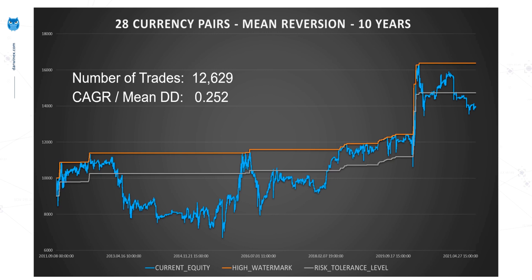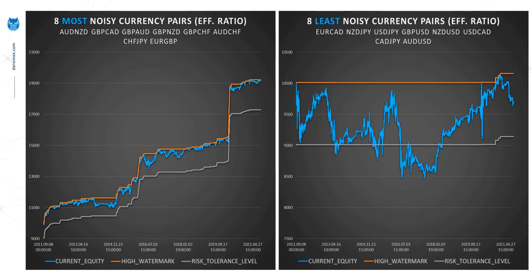Now let's look at the performance of the 8 most noisy and the 8 least noisy assets. On the left hand side, these are the 8 most noisy currency pairs as ranked by the efficiency ratio. The effect is significant — we went from a strategy, when traded against all 28 currency pairs, that had a drawdown of somewhere between 35 and 40%. However, the drawdown when we only trade these 8 is somewhere around 5% at its maximum levels, and not once does the equity curve reach the grey line.